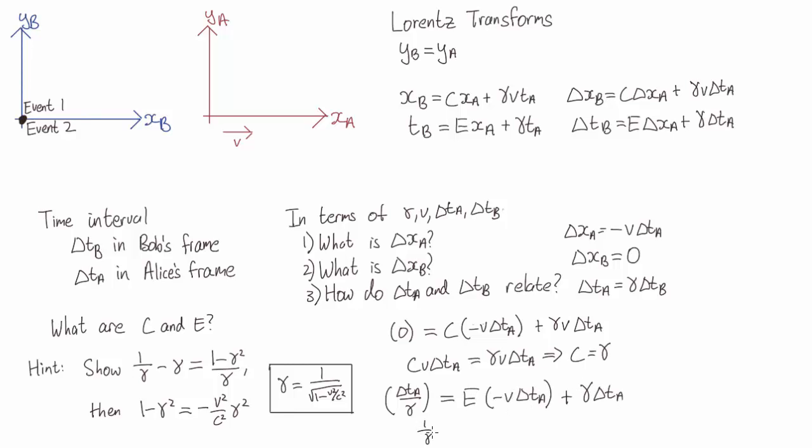And dividing all sides by delta TA, we get, or rather E is minus 1 over V, 1 on gamma minus gamma.